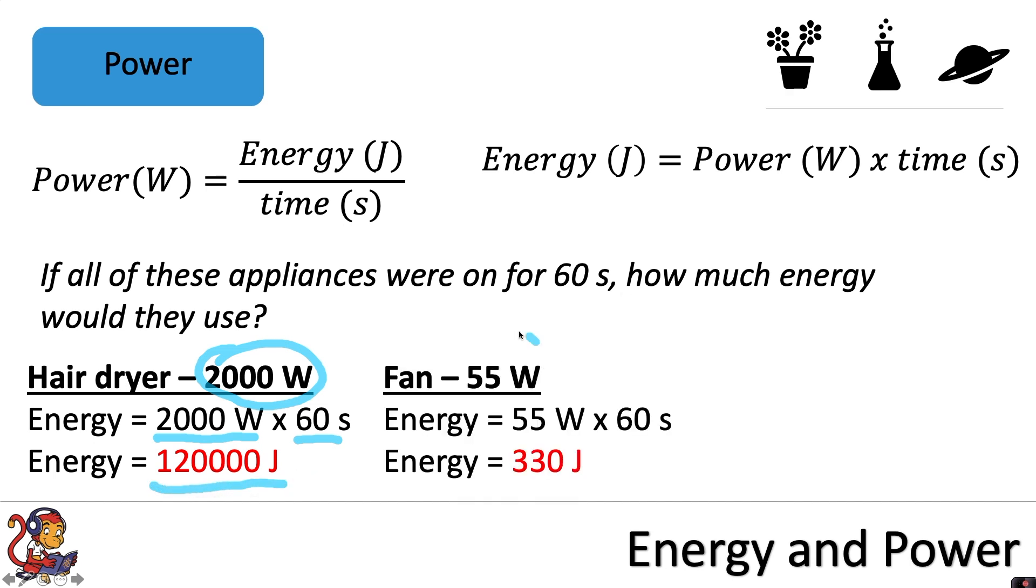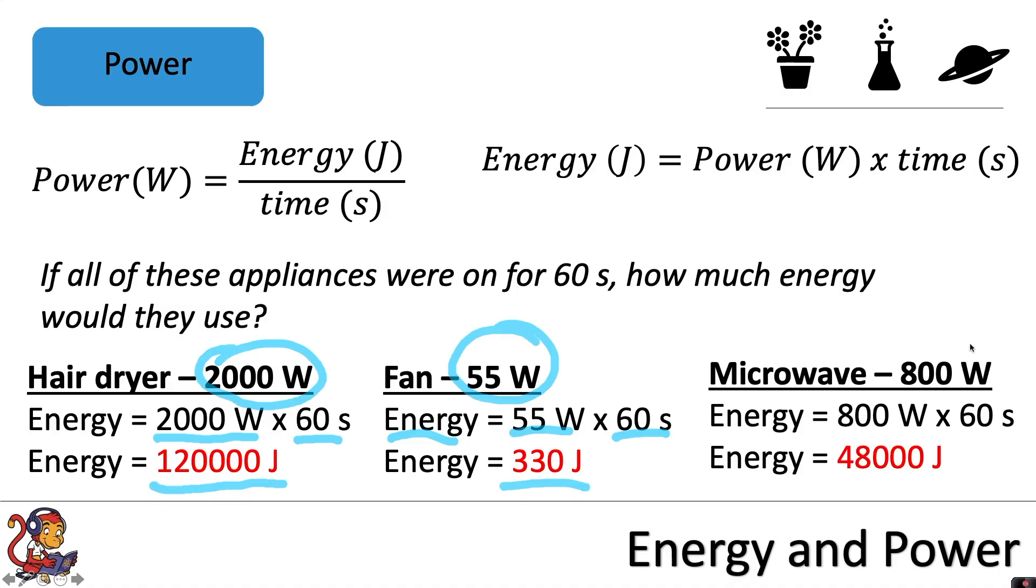The fan has a much lower power rating of 55 watts. And finally, for the microwave at 800 watts, to calculate the energy transferred by the microwave in 60 seconds, we would do 800 multiplied by 60 to get 48,000 joules.